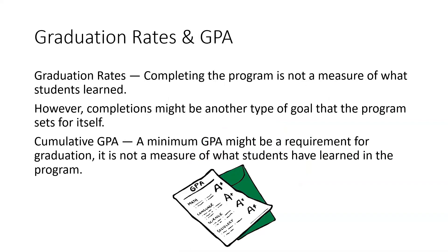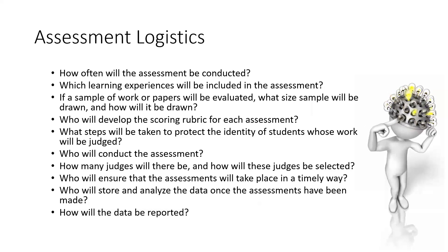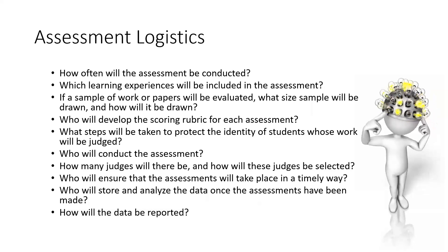Some other measures are also not good indicators of student learning. Graduation rates — completing the program — aren't really a measure of what students learned, though completions could be a goal you set. GPA also isn't really a measure of what students have learned in the program. Just give that some thought.